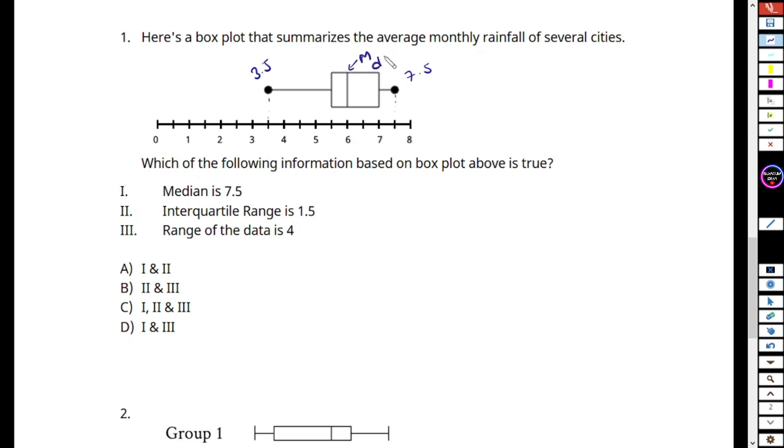Now we are ready, so we have to check the options. First one is median is 7.5. No, median is 6 here, so this is wrong. Interquartile range is 1.5. Let's check. This is our Q3, and this is our Q2. What is our Q3 from the graph? Q3 is 7. What is our Q2? Q2 is 5.5.